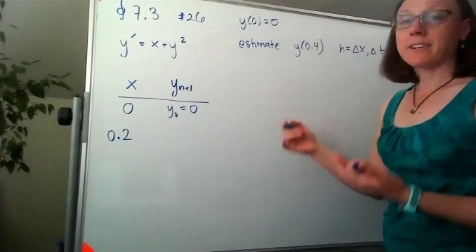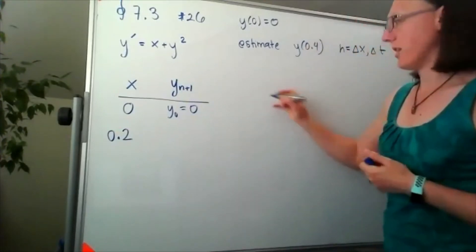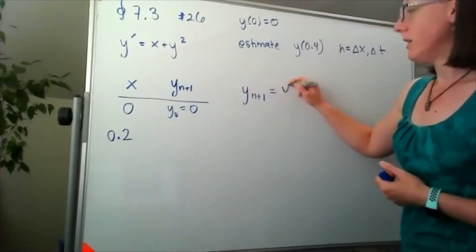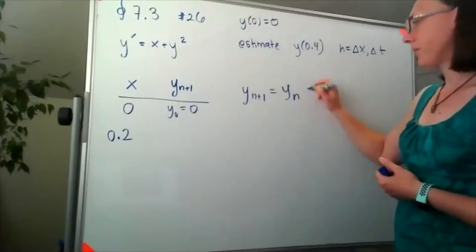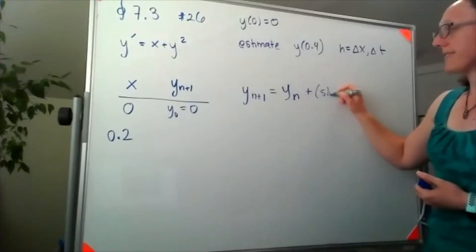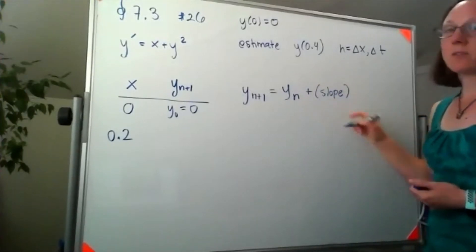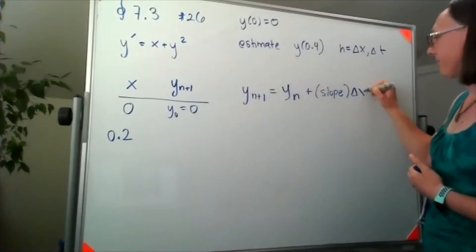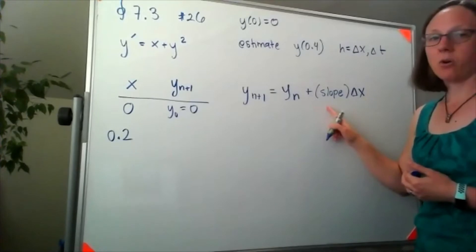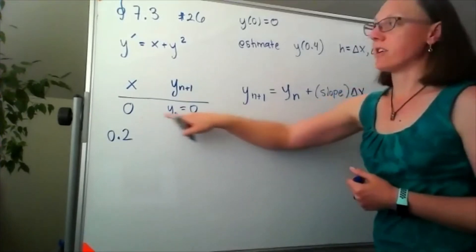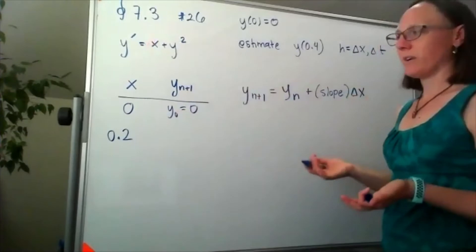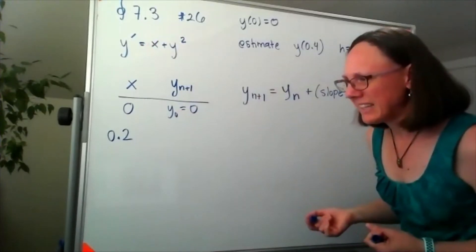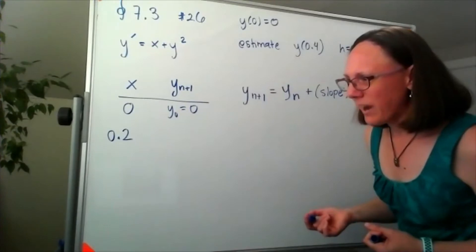How I'm going to get my next y value is we're going to follow the equation of the tangent line. So in general, I'm going to get to that next y value by looking at where I am now plus my slope times the little delta x that we're taking. To get my slope, I'm standing at the point (0,0) and my y prime is going to tell me what the slope is.